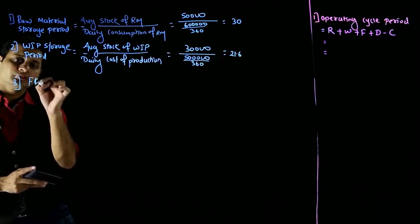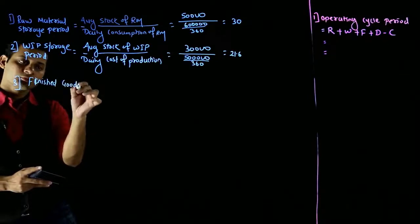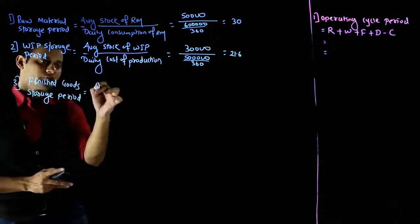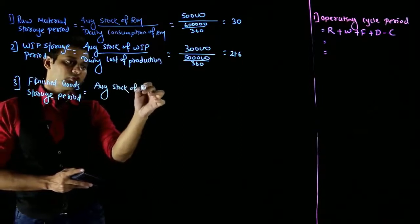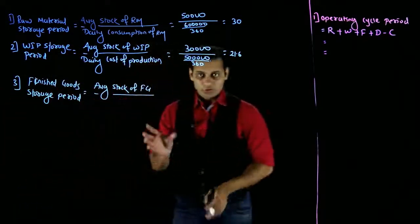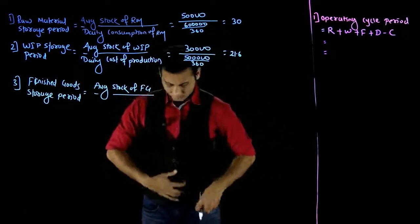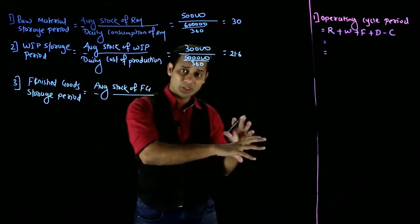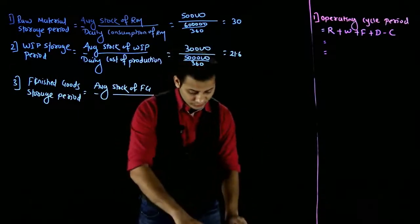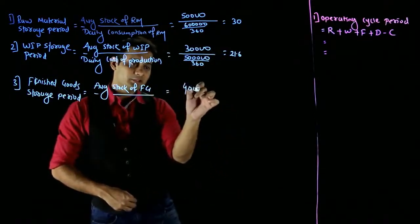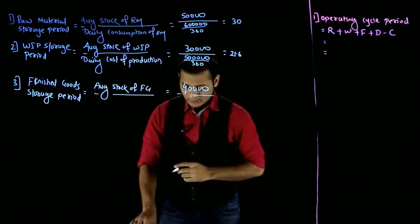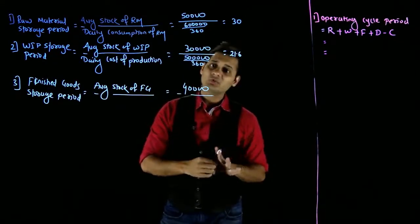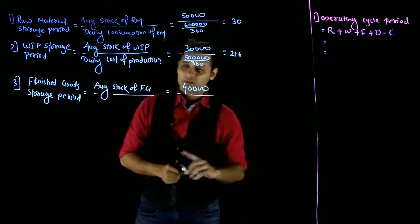Finished goods storage period. This is also the same - average finished goods divided by. From stores department, goods go to production hall, from production hall to finished goods store. We have to find out how many days it stays there. Finish goods stock is 40,000. We need to know how many days 40,000 will stay here, when it will leave. When it leaves finish goods department, it goes to debtors, meaning it's sold.